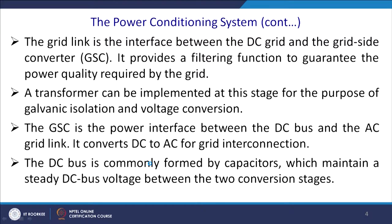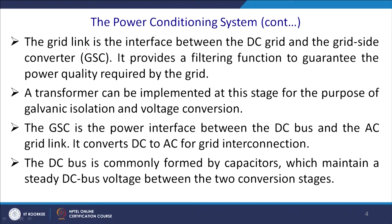The MPPT voltage depends on the string length, generating some DC voltage level. However, your DC bus may be connected to, say, 48 volts, and for this reason you require another DC-to-DC converter — your PVSC. Similarly, if you are injecting power to the grid, you require AC-to-DC and DC-to-AC conversion, named the grid side converter. The grid link, which is the interface between the DC grid and the grid side converter, provides filtering to guarantee the power quality as required by the grid code.